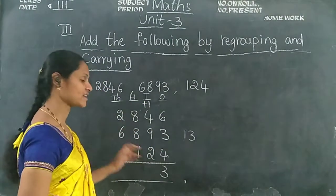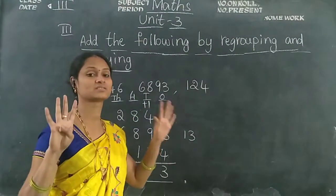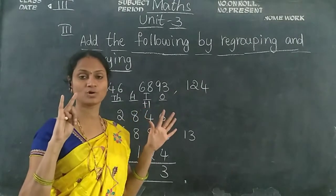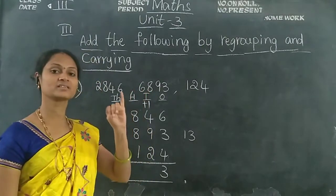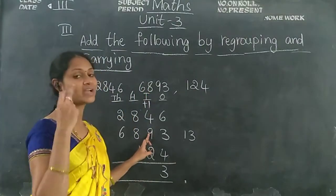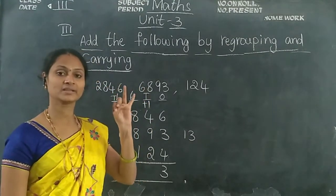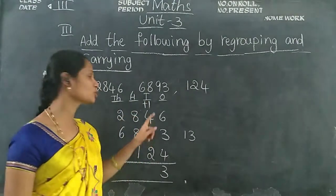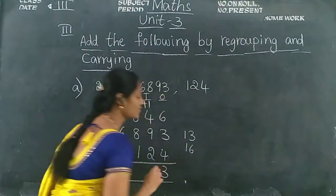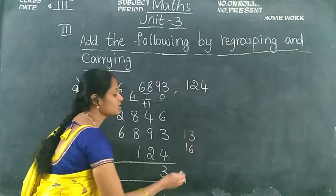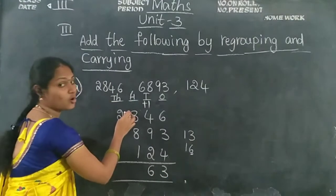Now 8 is in the tens place. Keep 2 in your mind, take 9 fingers: 2 after 3, 4, 5, 6, 7, 8, 9, 10, 11. Keep 11 in your mind, take 4 fingers: 11 after 12, 13, 14, 15. Now 15 plus 1 equals 16. So 6 should be written in the tens place and 1 will carry forward to the hundreds place.